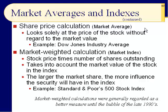We need to understand capitalization — in other words, how big is the company. The larger the market share, the more influence the security will have in the index. This is mostly how all the averages and indexes you hear about work — they're mostly all indexes. The Dow Jones Industrial Average is the major average, and the reason is because it's only 30 stocks. Standard & Poor's has 500 stocks, so they have to use this market-weighted calculation.